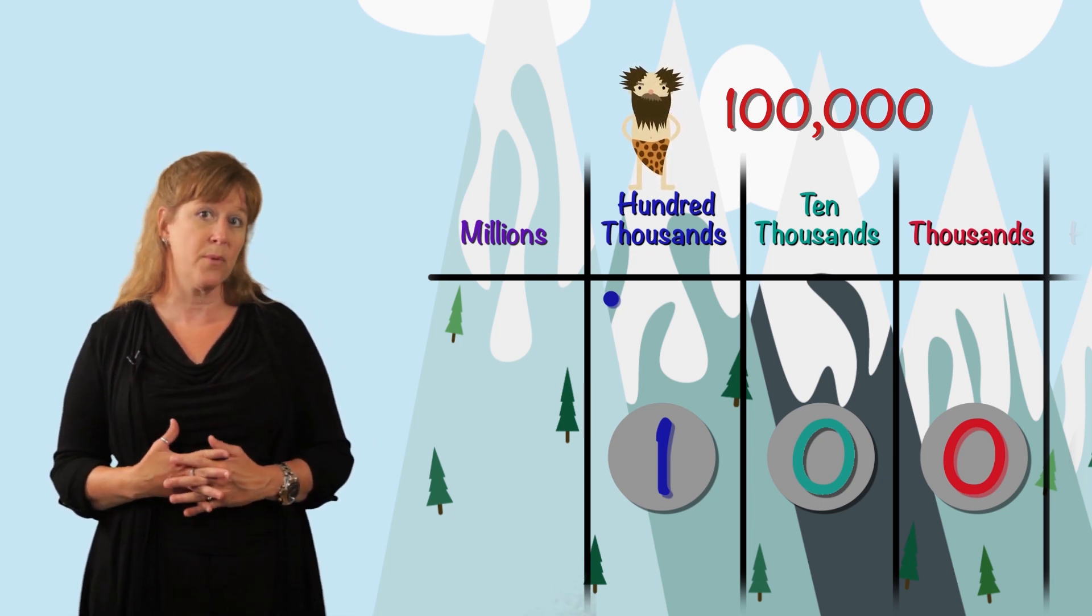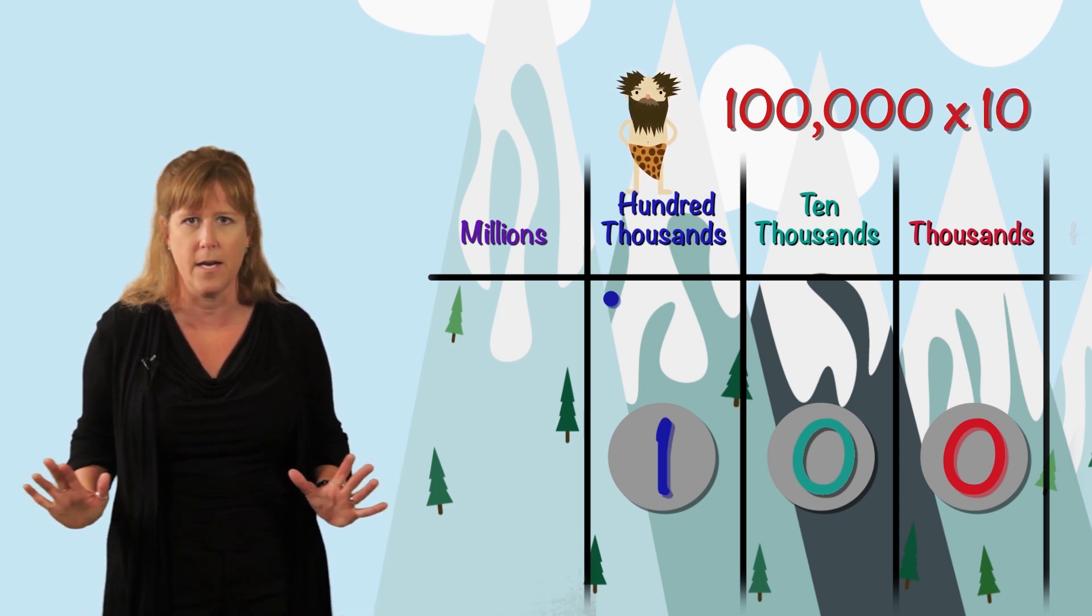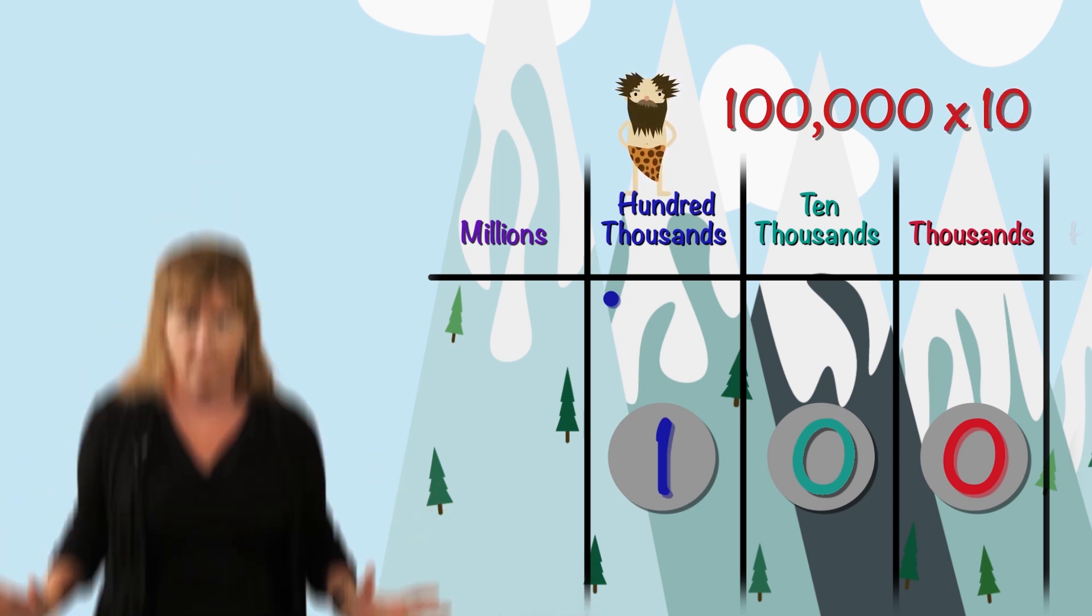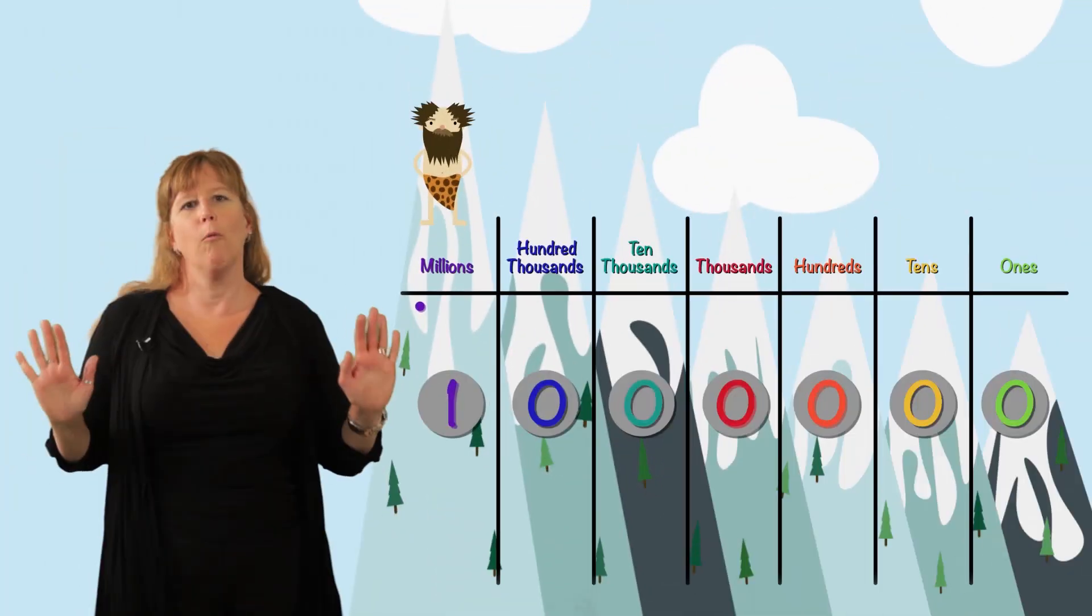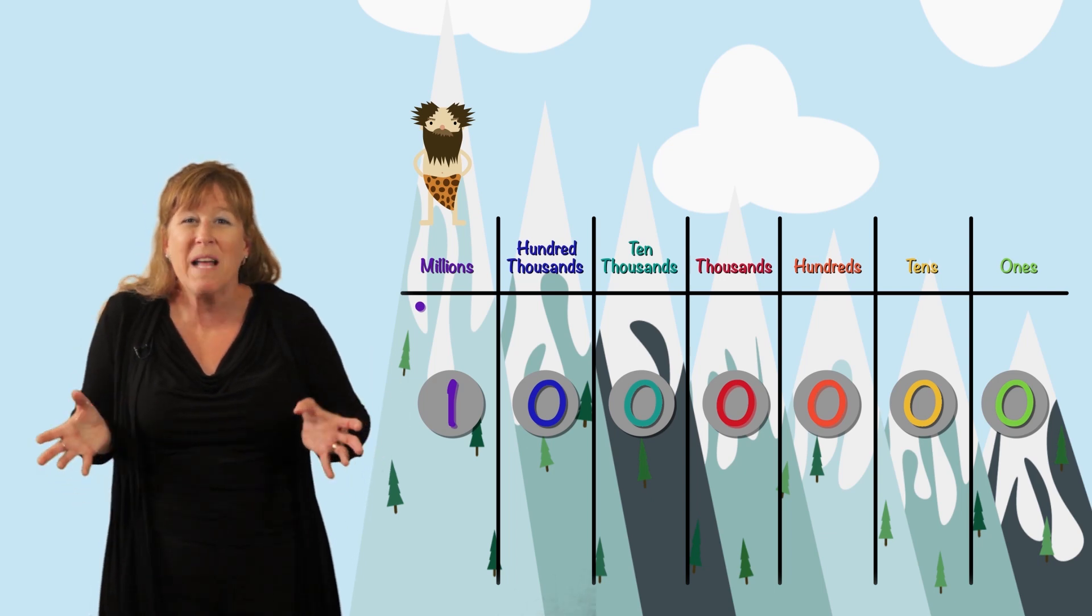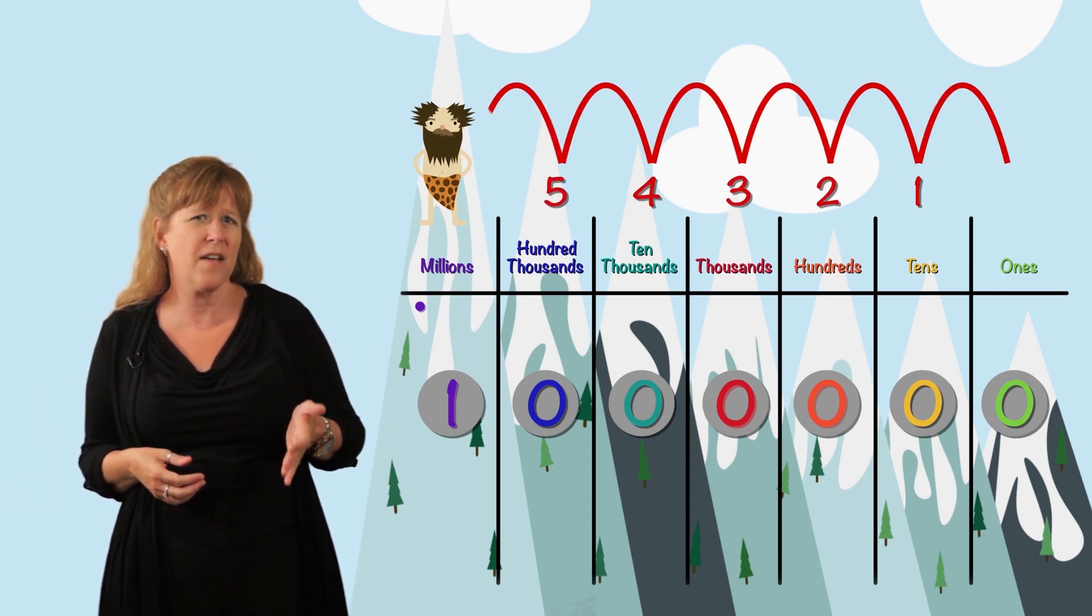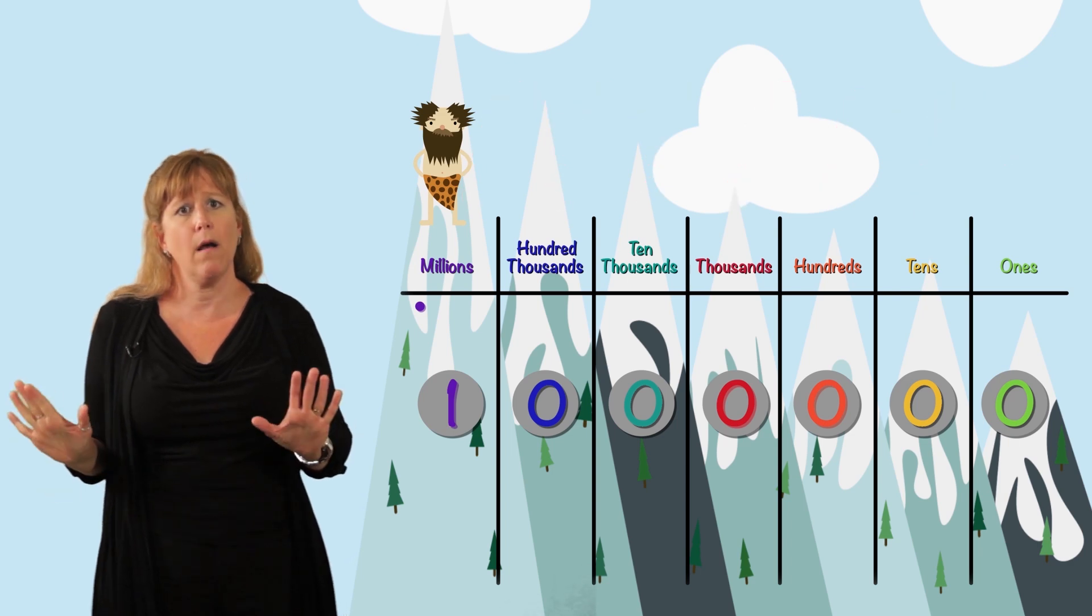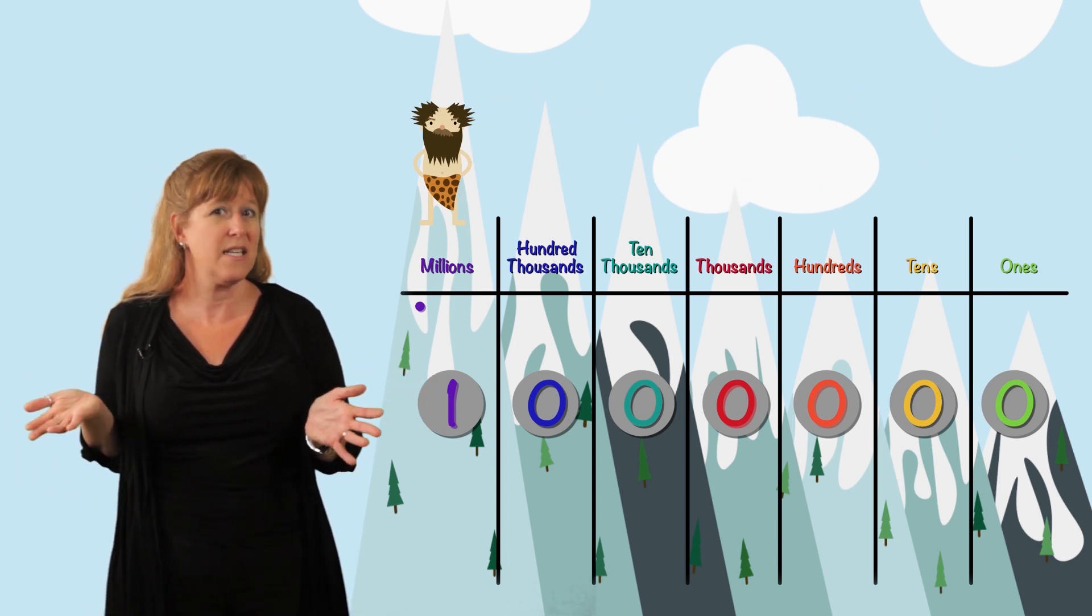We made it all the way from one to one million in one, two, three, four, five, six steps. But uh-oh. Now we're stuck here. How are we going to get back?